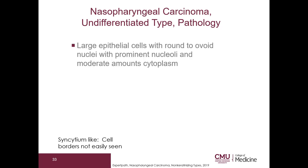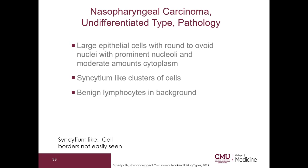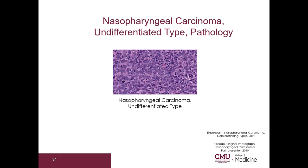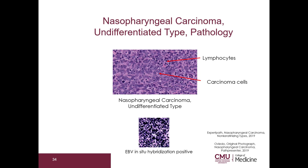This tumor is composed of large epithelial cells with round-to-ovoid nuclei, prominent nucleoli, and moderate amounts of cytoplasm. There are syncytium-like clusters of cells — syncytium-like means you cannot see the cell borders very well. There are benign lymphocytes in the background. This tumor is positive for Epstein-Barr virus by in situ hybridization. Here are the carcinoma cells and the background lymphocytes; the dark bluish-black color represents in situ hybridization positive for Epstein-Barr virus.